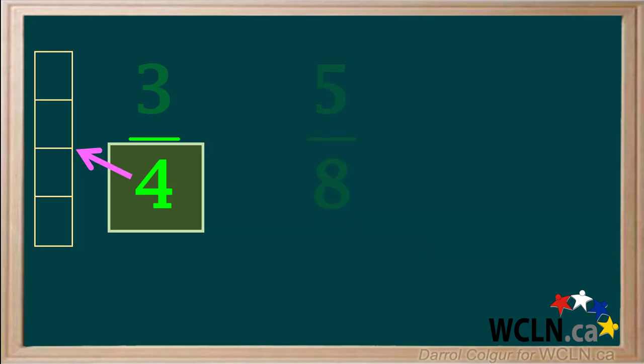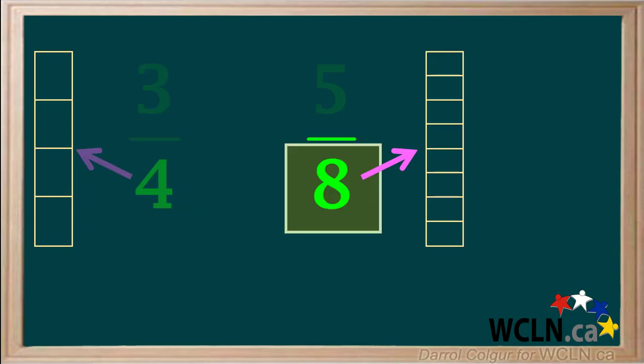In the fraction 3 quarters, the denominator 4 tells us a whole object is divided into 4 parts. But in the fraction 5 eighths, the 8 tells us the whole object is divided into 8 parts.